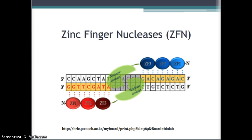ZFN has a cleavage domain with the endonuclease FokI. ZFN is a heterodimer that requires dimerization for FokI to work. ZFN then makes a double-stranded break at any desired location. However, ZFN can be quite costly and sometimes hard to make.